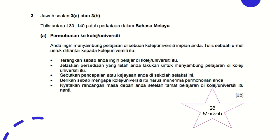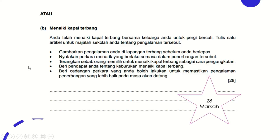Now we go to the last part of the paper. Jawab soalan 3A atau 3B — they give you two options. 3A is permohonan ke college atau university, your application to go to university or college. The marks for Part 3 is 28 marks; in the old format it was 30 marks. You need to answer all the points given. Question 3B is menaiki kapal terbang — anda telah menaiki kapal terbang bersama keluarga untuk bercuti, tulis satu artikel untuk majalah sekolah tentang pengalaman tersebut. It's 28 marks — choose one only.